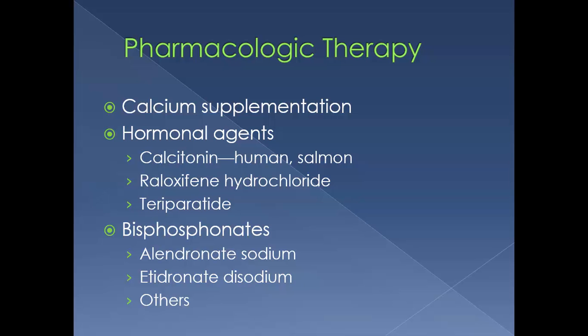Some of your hormonal agents include calcitonin, which can be human or salmon based. Raloxifene hydrochloride is Evista. Teriparatide is Forteo. There is a table on page 802, table 12-14, that has the uses, routes, dosage, and side effects of each of these.